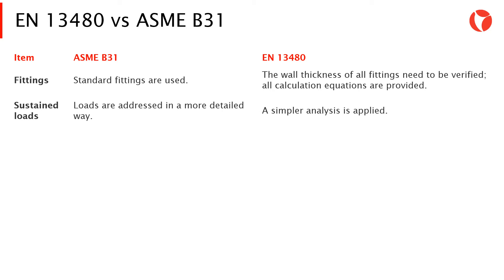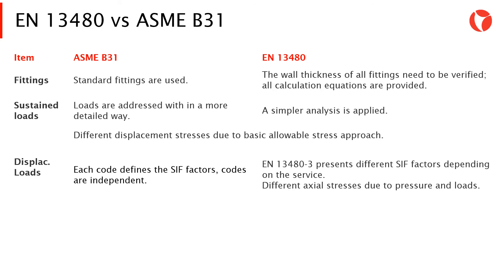Regarding sustained loads, in the ASME B31 code loads are addressed in a more detailed way, whereas in the EN 13480 code a simpler analysis is applied. Regarding displacement loads, there is a different approach to displacement stresses, mainly due to the basic allowable stress being calculated or obtained in a different way.